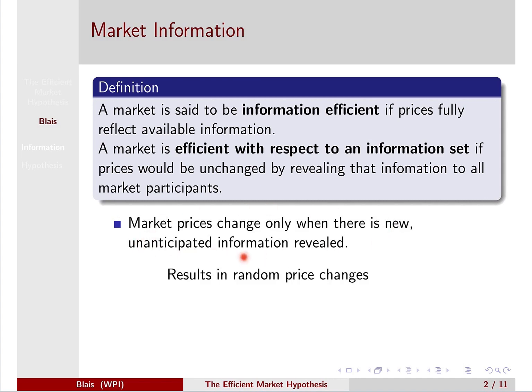The conjecture is that market prices only change when there is new unanticipated information revealed. That's what results in random price changes. As time moves forward, new information is presented and that causes these fluctuations in price, which are random because the arrival of this new information happens randomly.